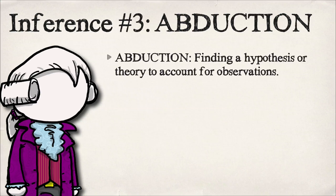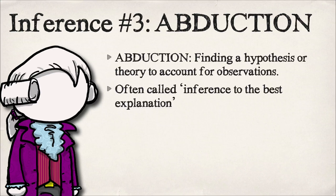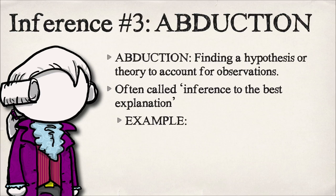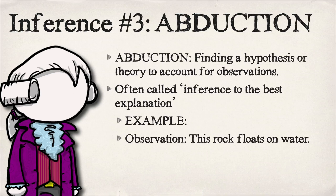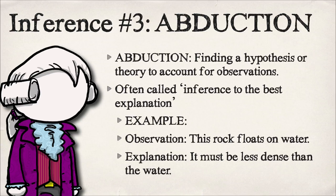Finally, the last type — and probably the most important type of inference in science — is abduction. This is what we all do all the time: finding a hypothesis or theory to account for the observations. It's often called inference to the best explanation. If you hear a noise outside your window, you do abduction to figure out what it is, coming up with the best possible explanation, whether it's a raccoon or kids playing basketball. For example, if a rock floats on water, a reasonable explanation is that it must be less dense than water.